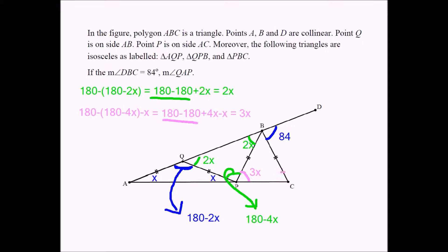And this angle has to equal 180 minus 6X. Why 6X? Because 3X plus 3X is 6X, and the three interior angles of any triangle add up to 180. So from 180, if you subtract the sum of these two angles, you're going to get the size of the third angle.